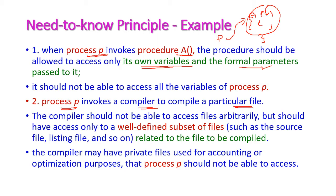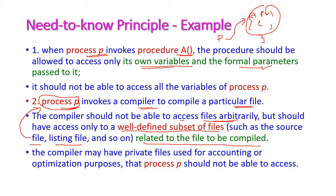In a second example, the process P invokes a compiler to compile a particular file. The compiler should not be able to access all files; it can execute only the file which this process has given — that is, only a well-defined subset of files such as source file, listing file, and so on. The compiler may have many private files, but the process should not be able to access all of them.